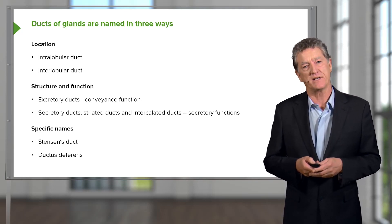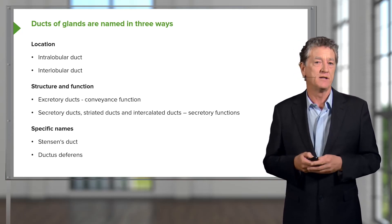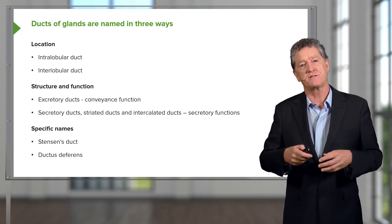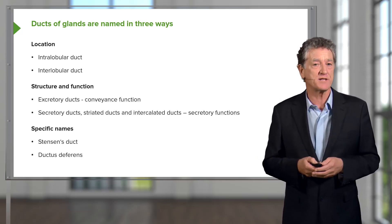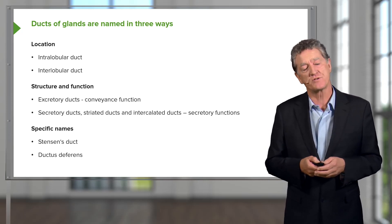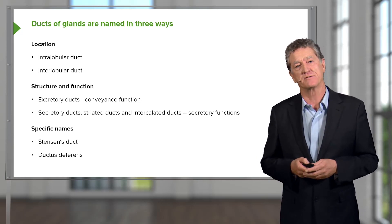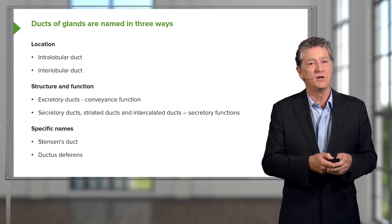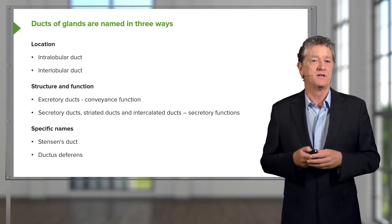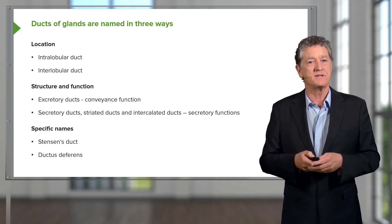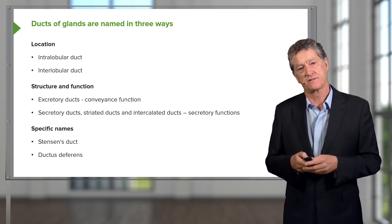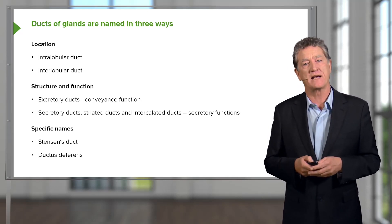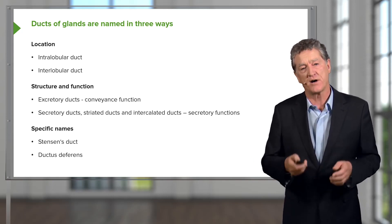But a lot of ducts — a lot of the secretory ducts — are involved with changing the components of the secretory products. They change the compounds because they're involved with transport of material into the lumen and the absorption of material from the lumen, so they have a secretory function just as much as the secretory cells do. In this case, you will see in glands ducts termed striated ducts or intercalated ducts, particularly in serous secreting or protein-secreting glands. These striated ducts and intercalated ducts are really involved with modifying the secretion product.